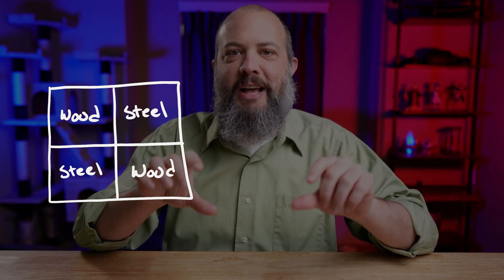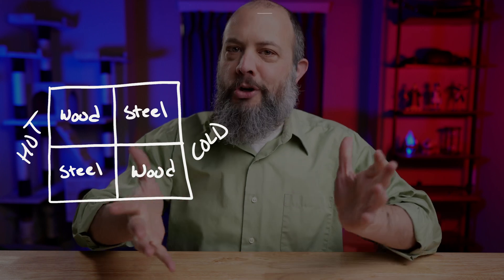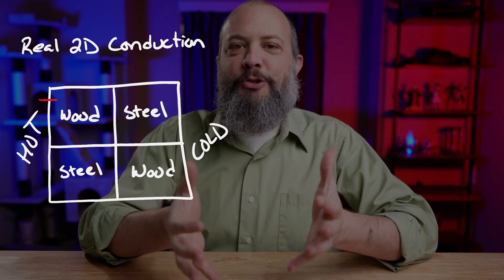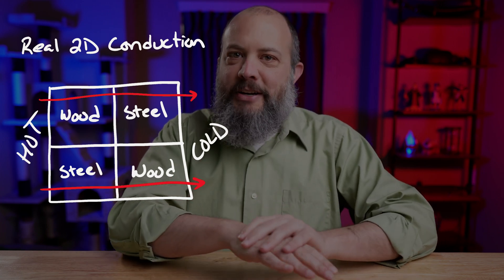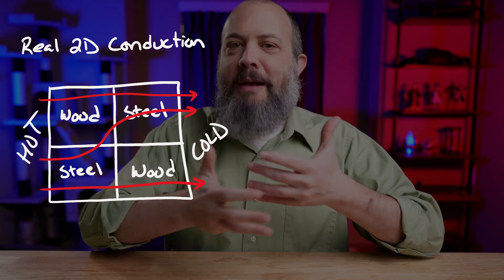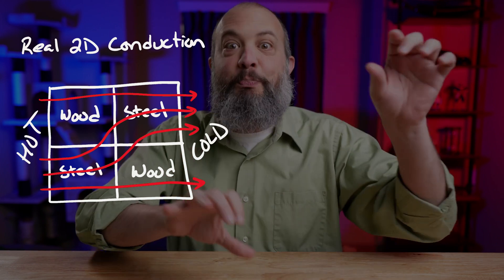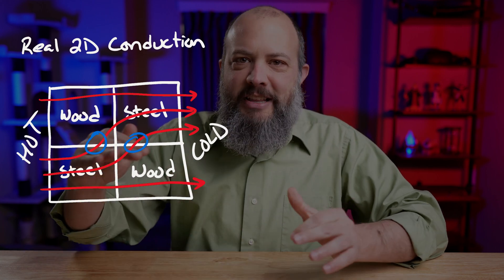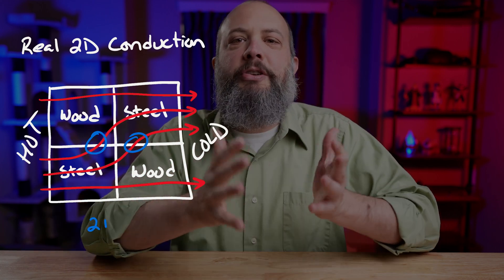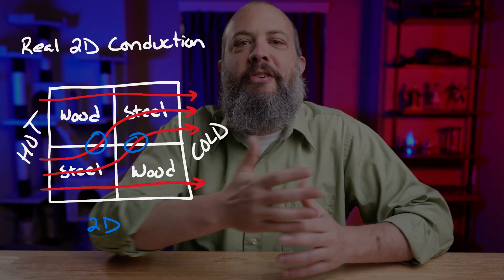First, a quick mini lecture to help you understand the difference between these two assumptions, then we'll come back and actually solve this problem numerically. Consider this simple composite wall with four sections: hot on the left, cold on the right, with wood and steel. Heat flows very easily through metal but wood is kind of an insulator. You can see with these red arrows what the energy wants to do — most of it wants to pass through the steel both times, but it can't instantaneously jump through the corner, so it has to cut the corner and partially go through some wood to get to the other area of steel.